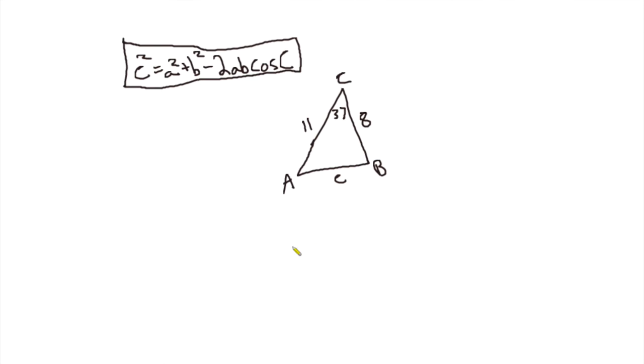Okay, so let's just solve this. Let's plug in what we have. We have c squared equals 8 squared plus b squared, 11 squared, minus 2 times side a, which is 8, times side b, which is 11, times cosine of 37.